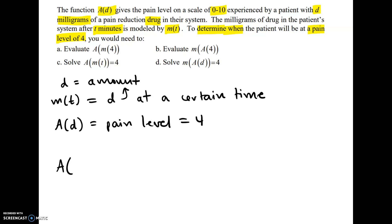Since M(t) gives D, you can plug M(t) in for D in the A function and set that equal to 4, which is the pain level. This will result in the time at which the patient is at pain level 4, and that looks like answer C.